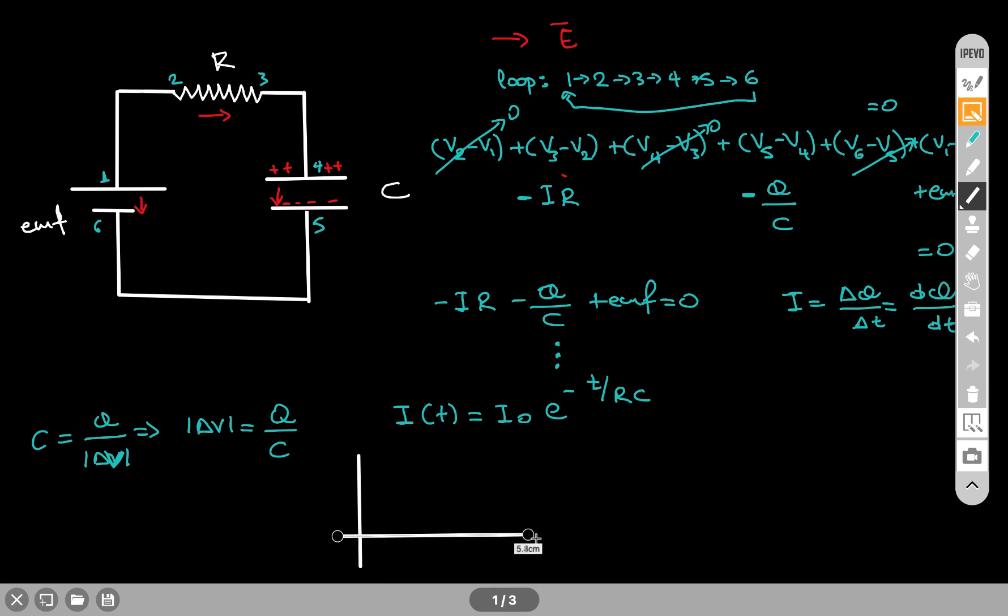And I'm going to do a graph really quick to show you, for you to have a graphical representation of this, the current will decrease exponentially. And this value will be the I0. This is I as a function of time.